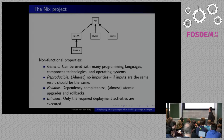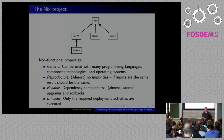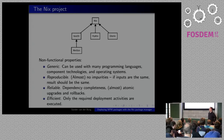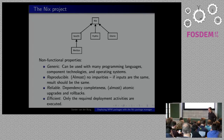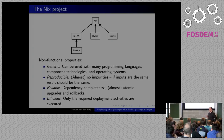Besides automated deployment, the tools in the Nix project also have a number of interesting non-functional properties. All Nix solutions are generic — it shouldn't matter what technology you use: C, C++, makefiles, Perl, Python, Ruby, Java. Another important property is reproducible deployment. Nix tries to hide as many impurities that will potentially influence package builds as possible, so that if the inputs of a build are the same, the build always yields the same result.